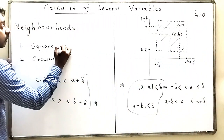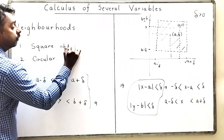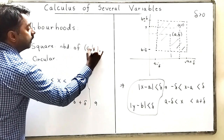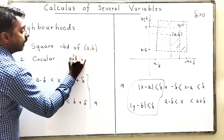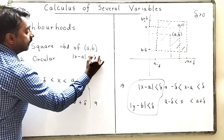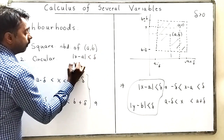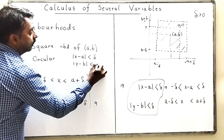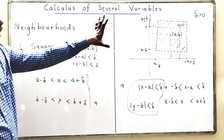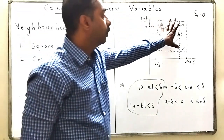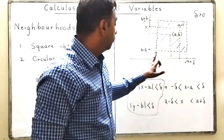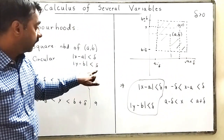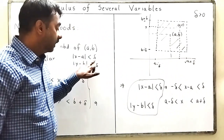So this is a square neighborhood of the point (a, b). I write it as: modulus of x minus a less than delta, and modulus of y minus b less than delta. This is the concept of the square neighborhood of point (a, b) with what I call the square radius delta.